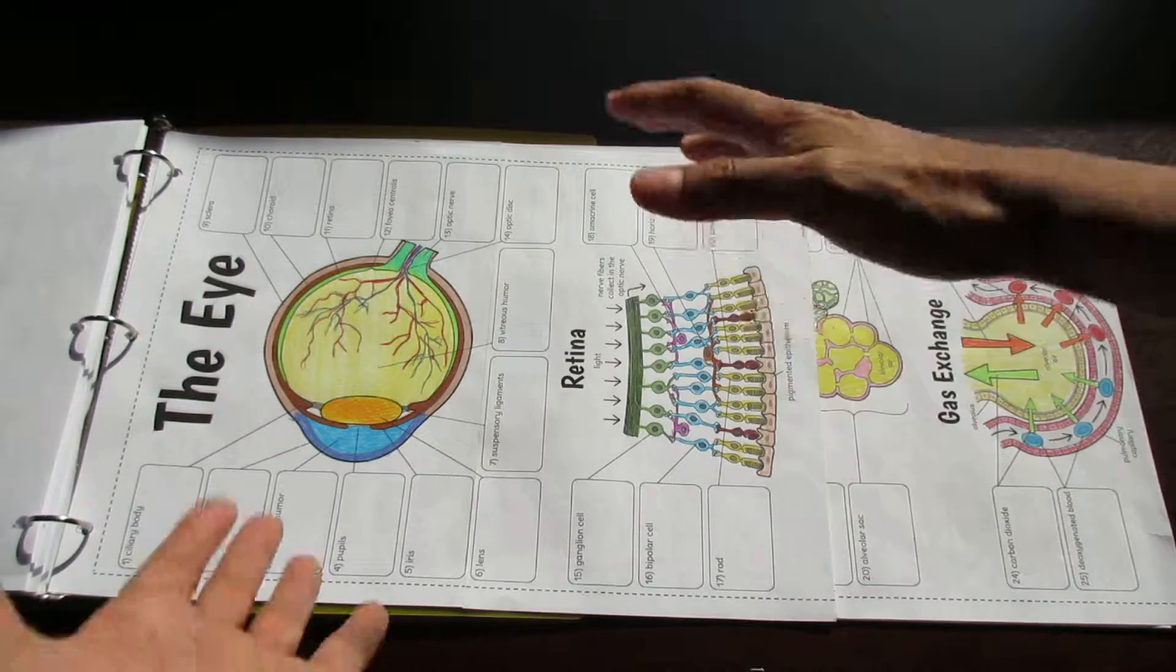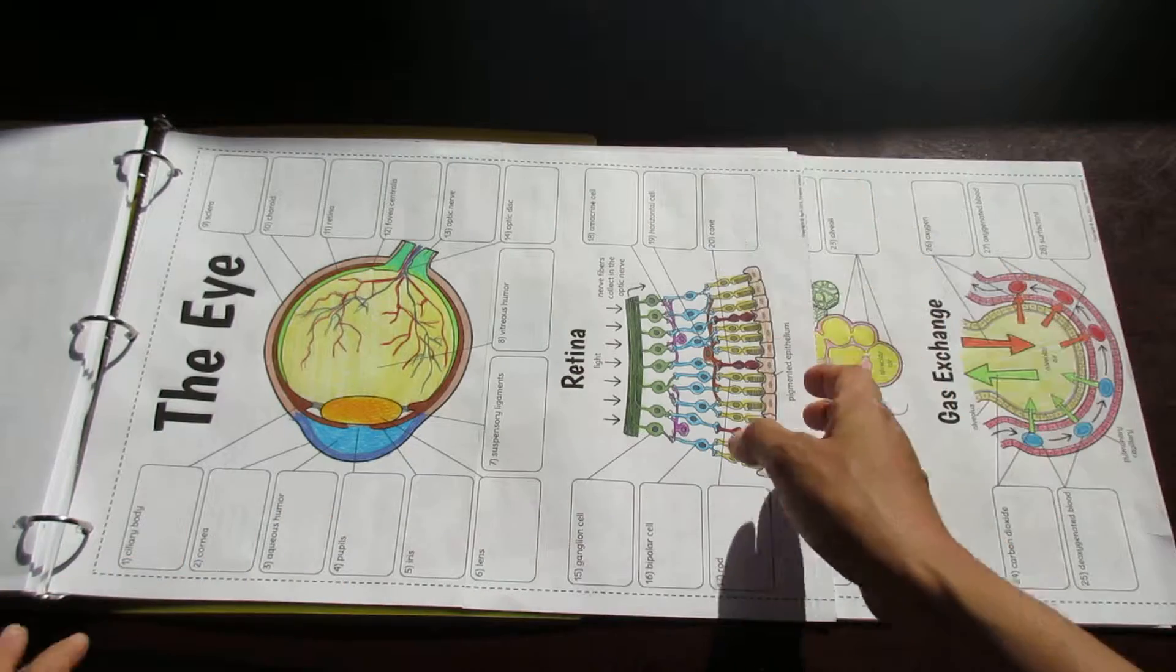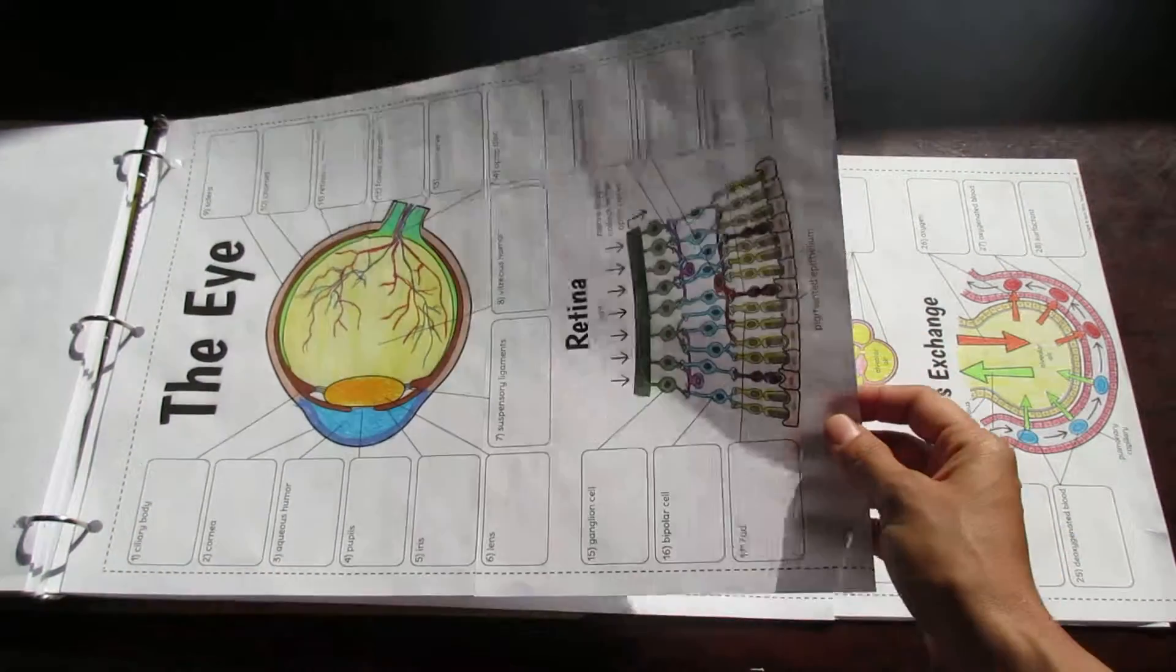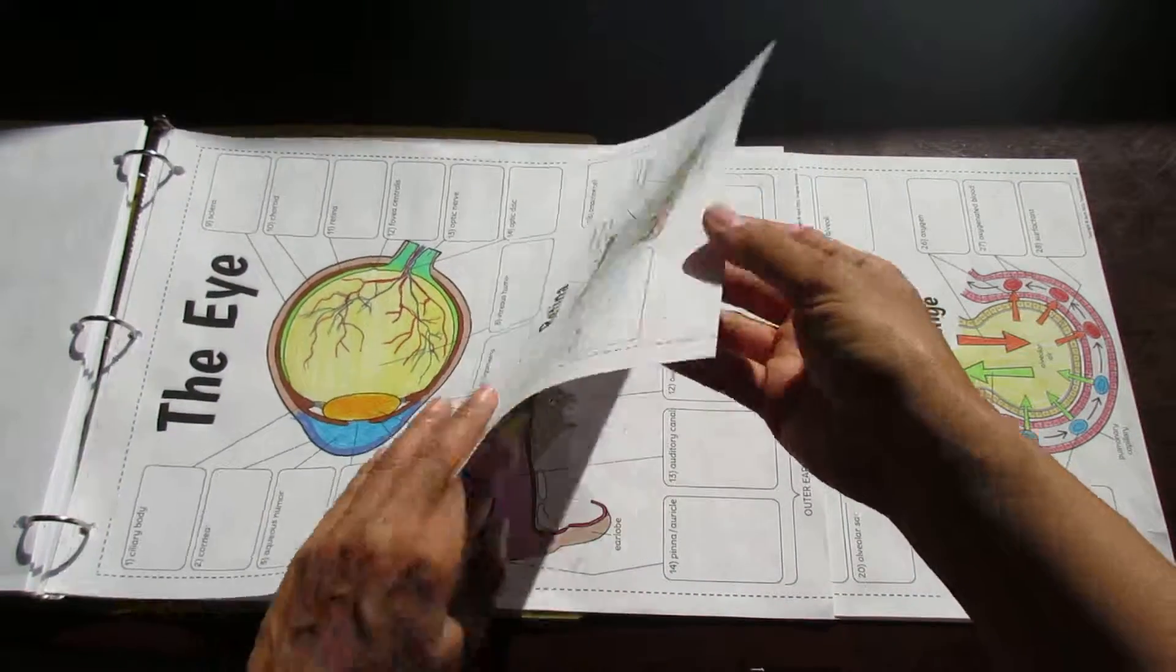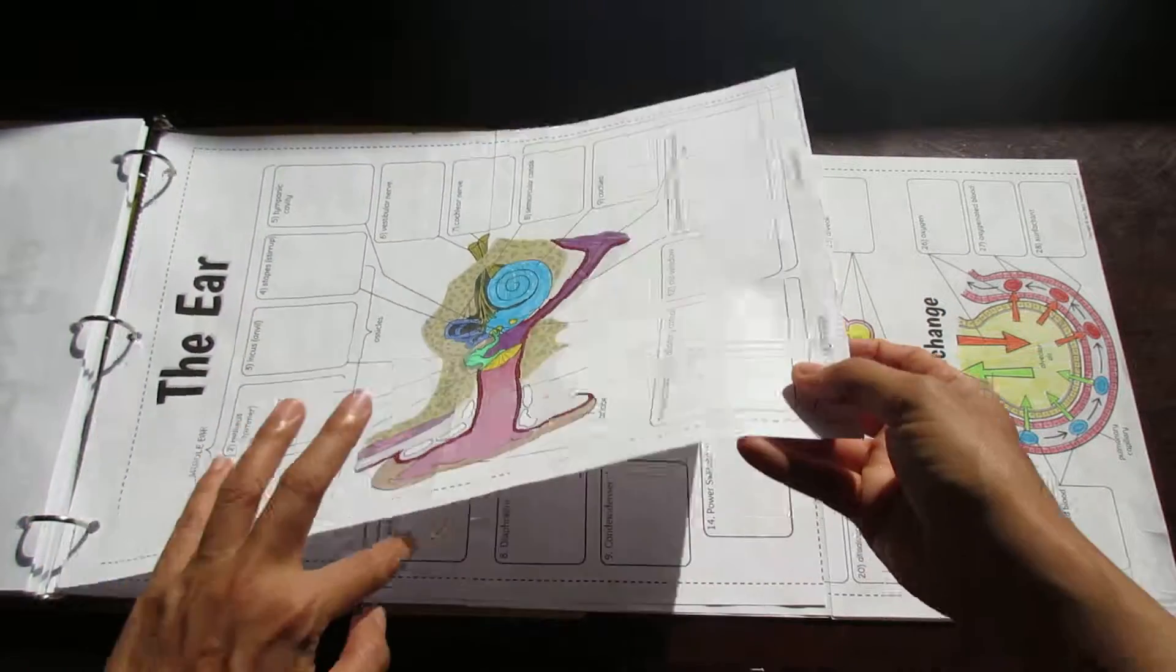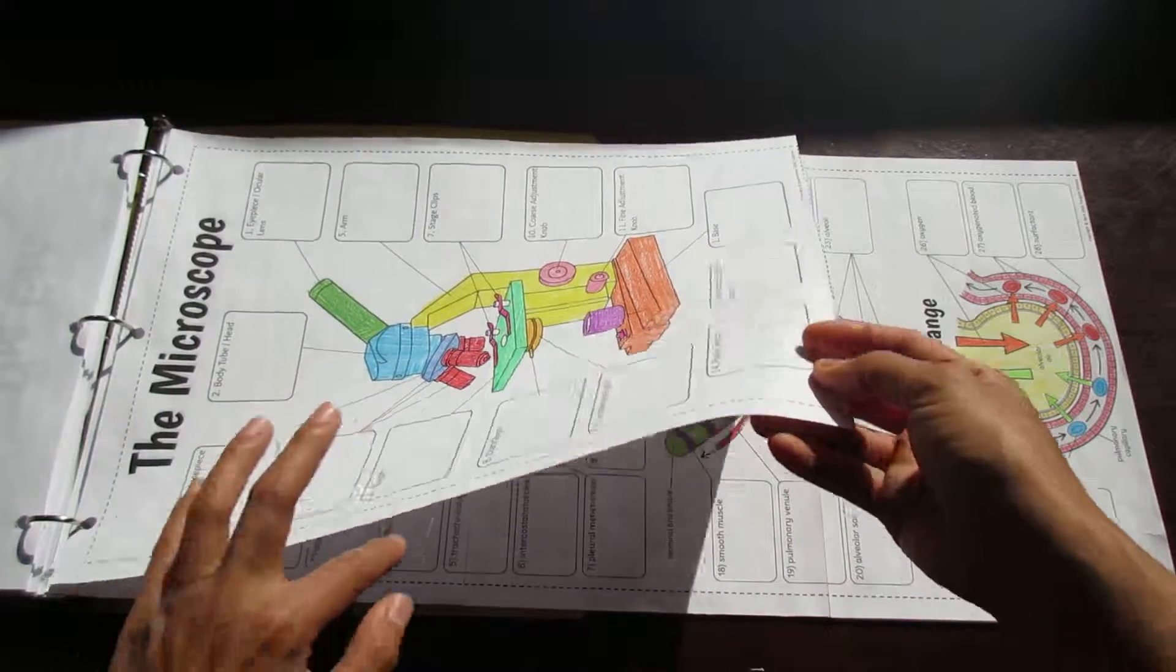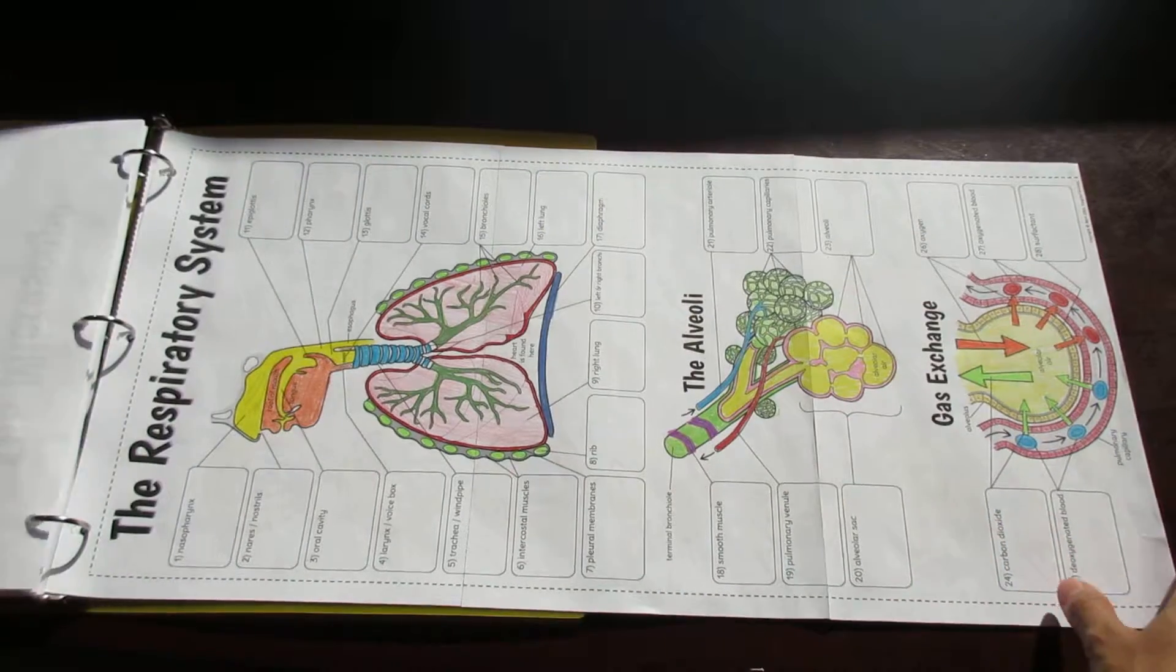Now here are some ones, if you were to look this way the foldables actually now go lengthwise. So this one is the big eye foldable, here's the ear foldable, this is the microscope. Now we've got some longer ones.